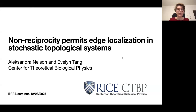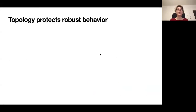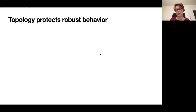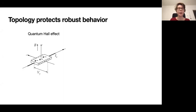Topological systems are known to have very robust behavior under changing environmental conditions. These notions come from condensed matter physics, and one of the most famous examples illustrating this concept is the quantum Hall effect, which I will briefly introduce as a starting point.